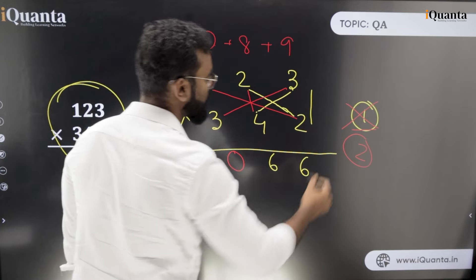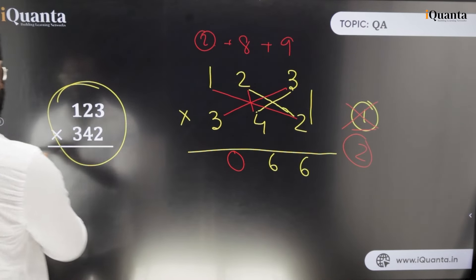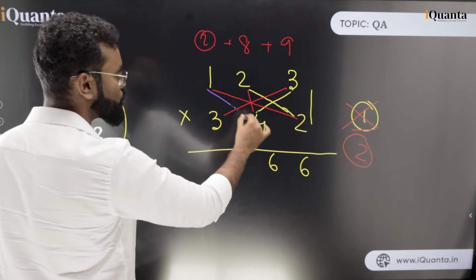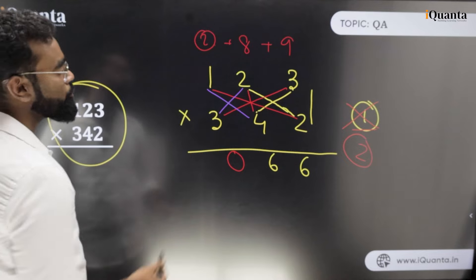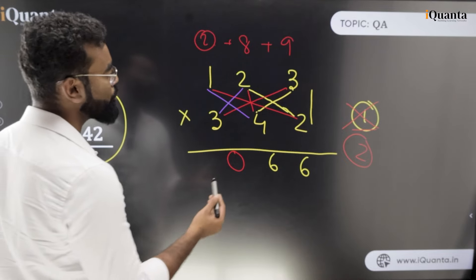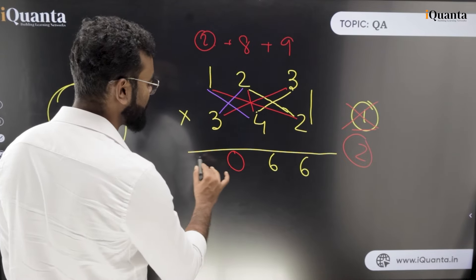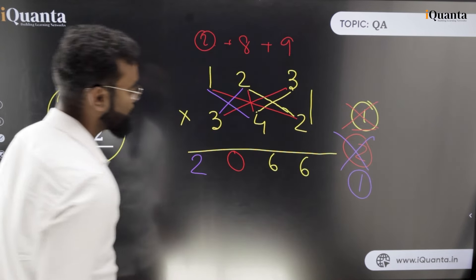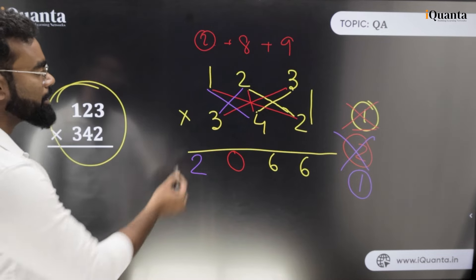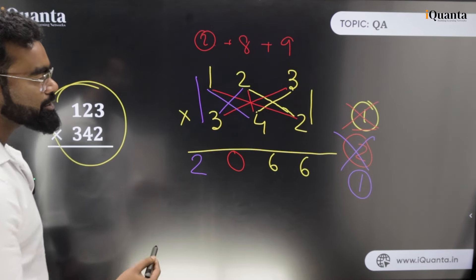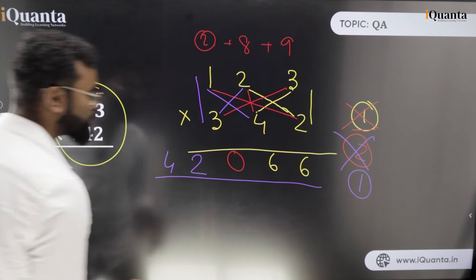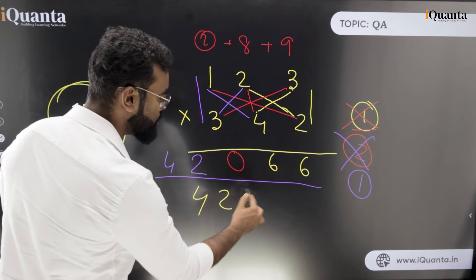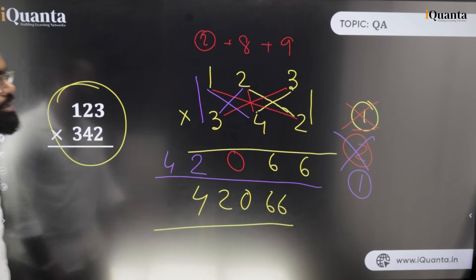The fourth step: 4 into 1 is 4, and 2 into 3 is 6, so 4 plus 6 is 10, plus carry 2 is 12 — write 2, carry 1. The last step: 1 into 3 is 3, plus 3 into 1 is 3, plus carry 1 is 4 — write 4. So the final answer is 42066.